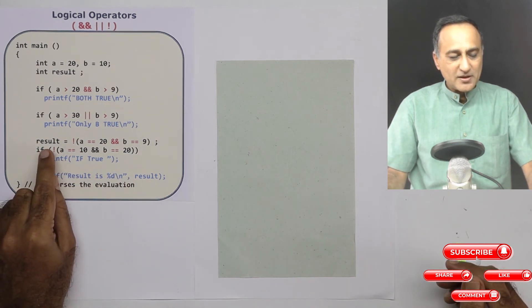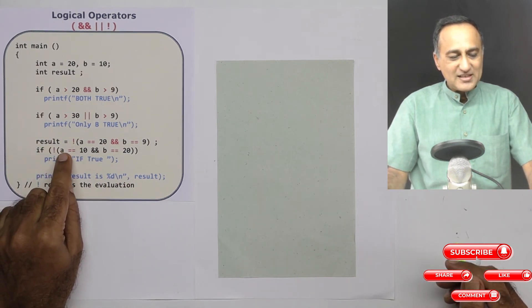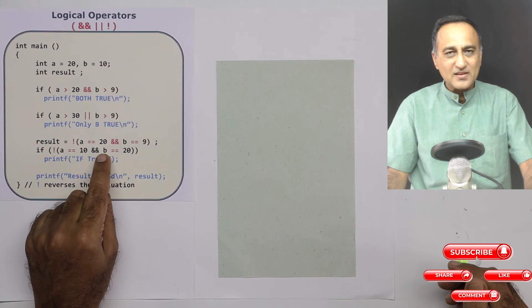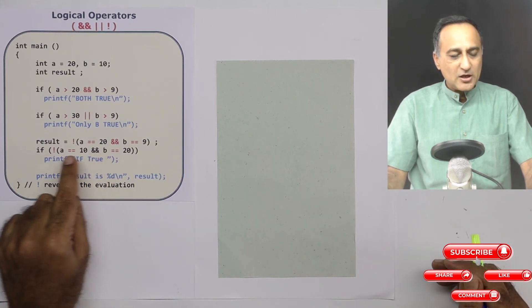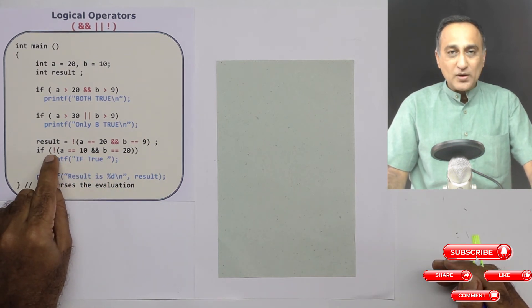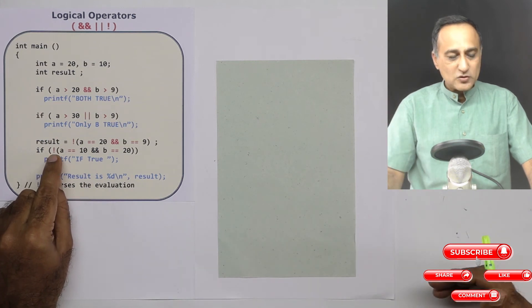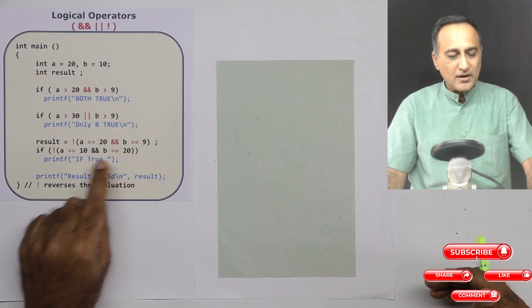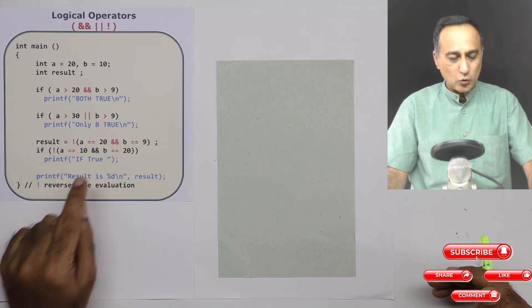Now take a look at one more if statement. Forget this not. A is equal to 10. This is false. It will not even go to this side because false and anything is always going to be false. But since it is inverted, that means it is reversed. So not false is going to be equal to true. So if true, it is going to print this particular message if true.